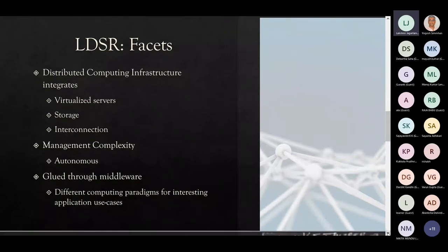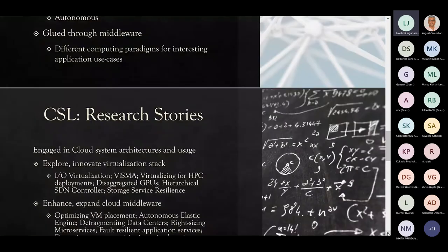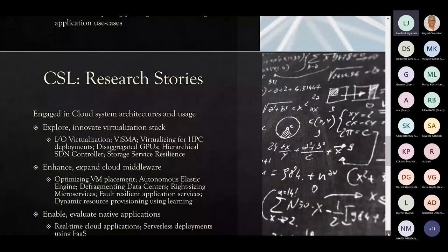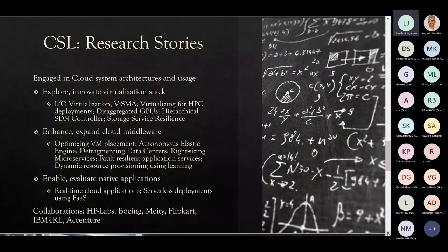So this is the basic background in terms of what we perceive from distributed systems in the cloud system lab. Let me also share some interesting stories that have happened as part of the research initiative that has been taken up in the cloud systems lab. The cloud systems lab essentially is engaged in cloud system architecture research and its usage. And broadly, we look into three aspects within this space of cloud system architecture. The first one is the system aspect of the architecture.